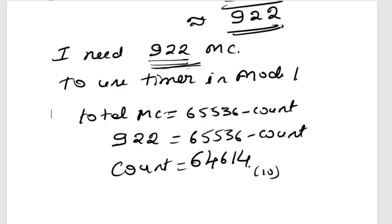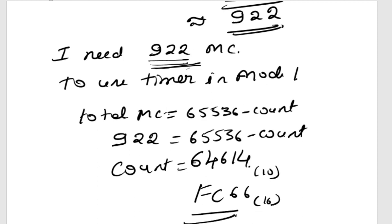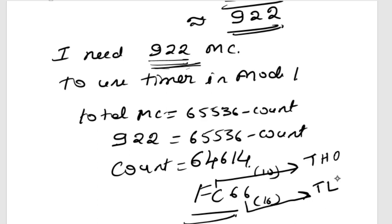The decimal value 64614 in hexadecimal is FC66. So FC66h is the required timer register value. The high byte FC will be loaded into TH0 and the low byte 66 will be loaded into TL0. These are the two register values to use for a one millisecond delay.